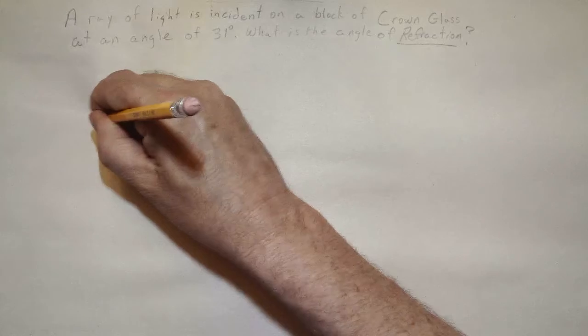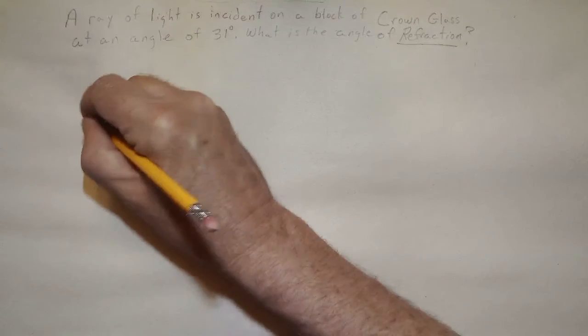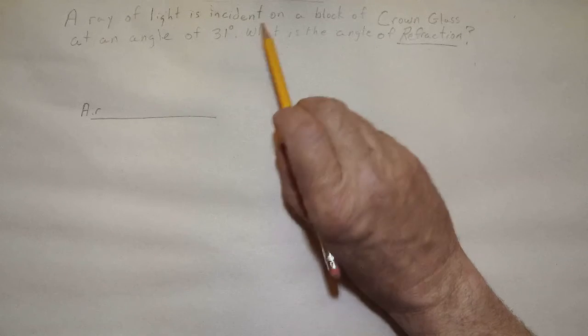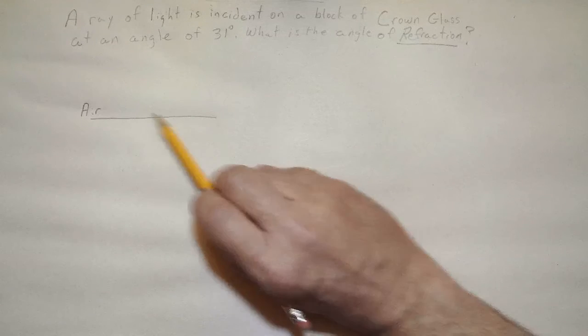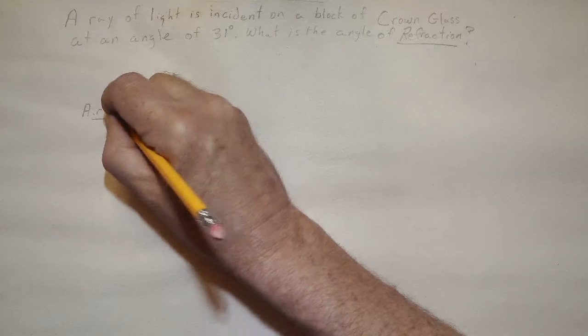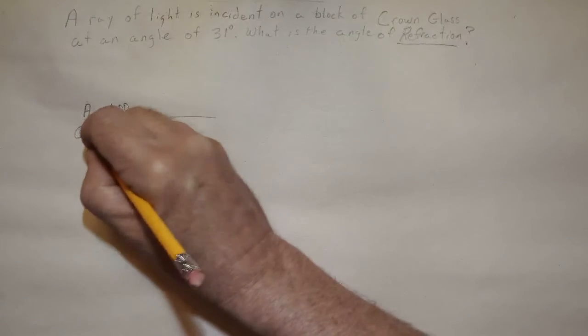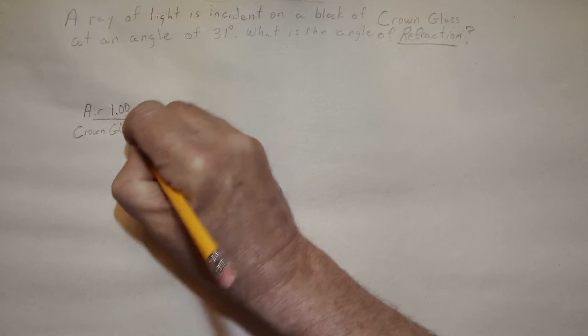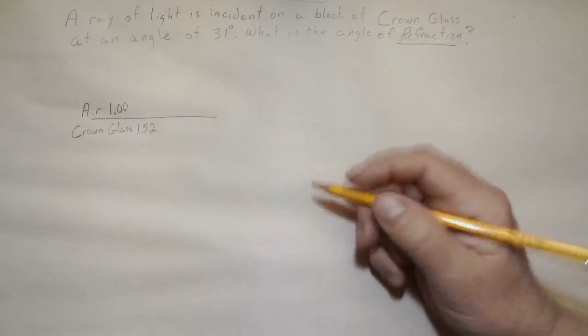To start off, let's just draw it so we remind ourselves what we're talking about. It does not say what the incident medium is, in other words what medium the ray of light is progressing through, so we assume it is air. If nobody says, assume air, and that would be 1.00 for refractive index, and crown glass is 1.52 for refractive index.